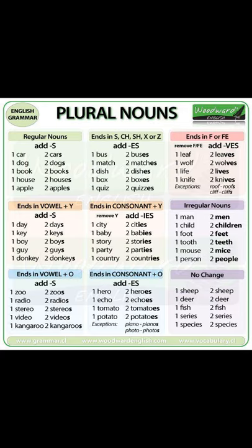Examples of consonant + -y → -ies: city → cities, puppy → puppies, activity → activities.